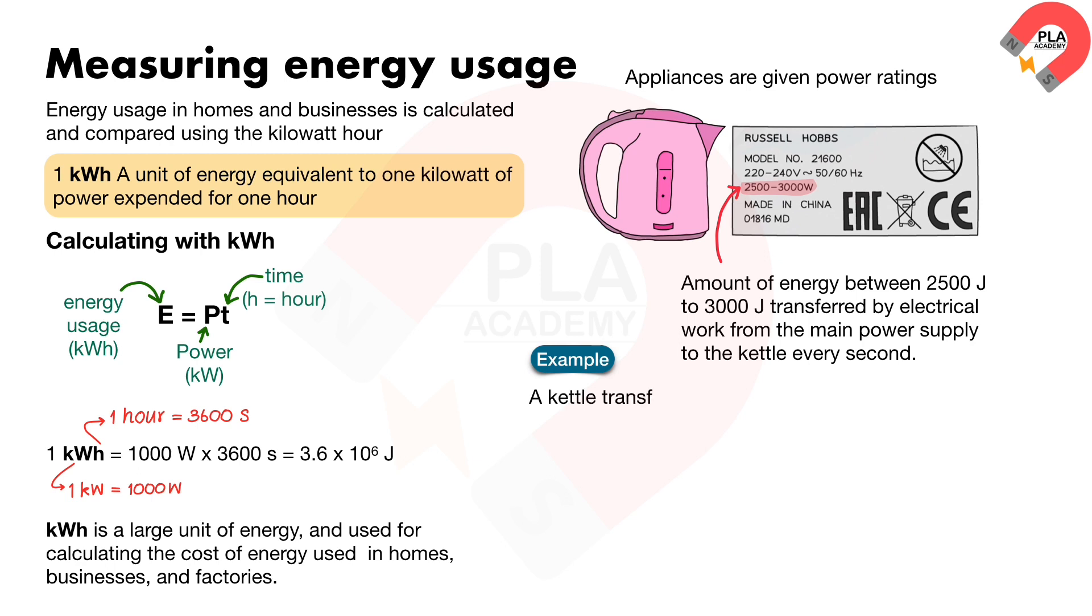For example, a kettle transfers two thousand five hundred watts of electrical power to heat in ninety minutes. How much will this cost if one kilowatt-hour costs fourteen point two pennies?